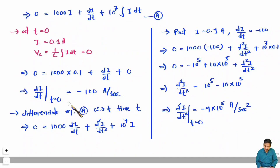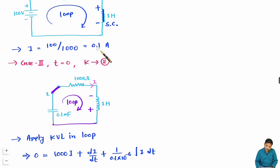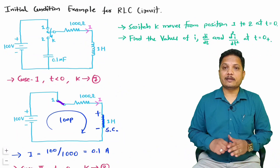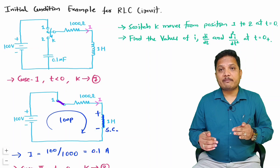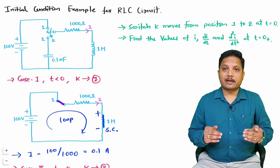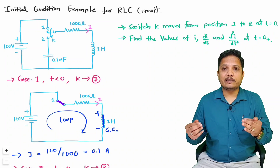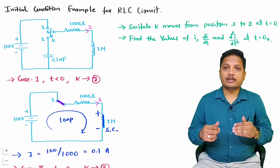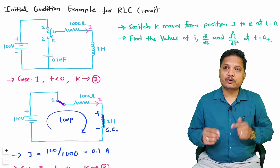We have now calculated all three terms at t = 0 plus: current i = 0.1 A, di/dt = −100 A/s, and d²i/dt² = −9×10⁵ A/s². This is how, case by case and step by step, one can calculate initial conditions. There are more interesting and tricky questions based on initial conditions in this network theory lecture series playlist. If you have further doubts, place them in the comment box. Thank you for watching.